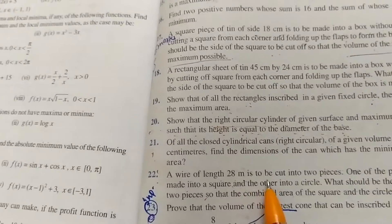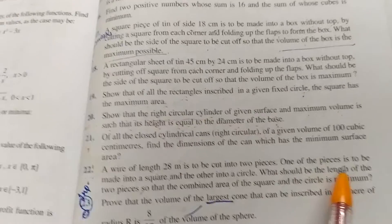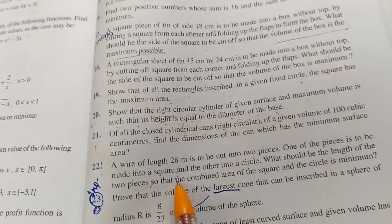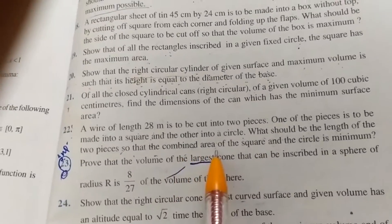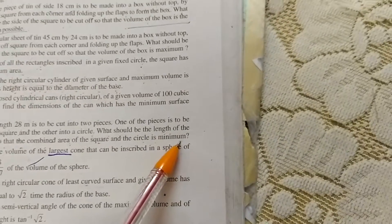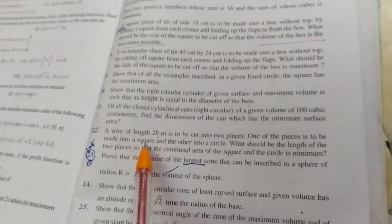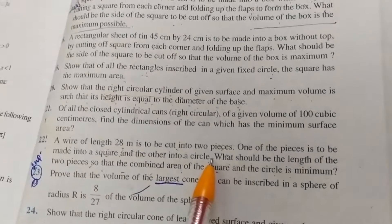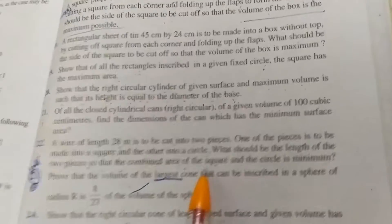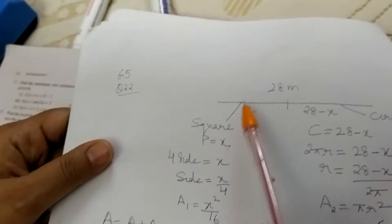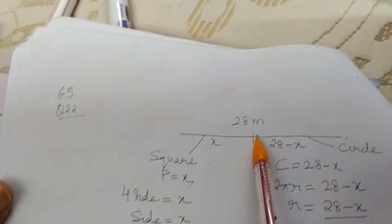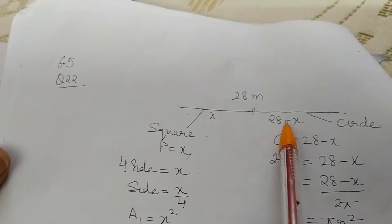Question 22 says: a wire of length 28 meters is to be cut into 2 pieces. One piece is to be made into a square and the other into a circle. What should be the lengths of the two pieces so that the combined area of the square and the circle is minimum? Let one piece be x, so the other is 28 − x.